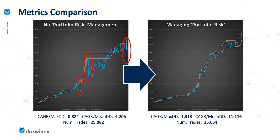Comparing the metrics with the curve on the right: the CAGR over maximum drawdown has increased from 0.8 to just over 1.3 — a fairly significant improvement. The improvement in CAGR over mean drawdown is even more pronounced, at almost three times better at 11.1. But take a look at the number of trades — this is reduced from 25,000 to just over 15,000. That is a direct result of portfolio risk being actively managed, which prevented a fairly large number of trades from opening — the trades that would have added more risk to the portfolio.